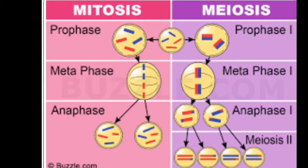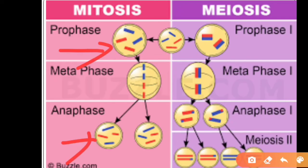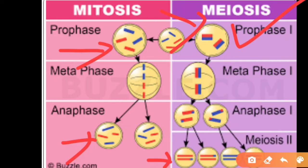In mitosis, the number of chromosomes present in the daughter cells is similar to that of the parental cells. In meiosis, the number of chromosomes present in the daughter cells is half the number of chromosomes present in the parent cells. So, mitosis occurs in haploid organisms for gametogenesis, and meiosis occurs in diploid organisms for gametogenesis.